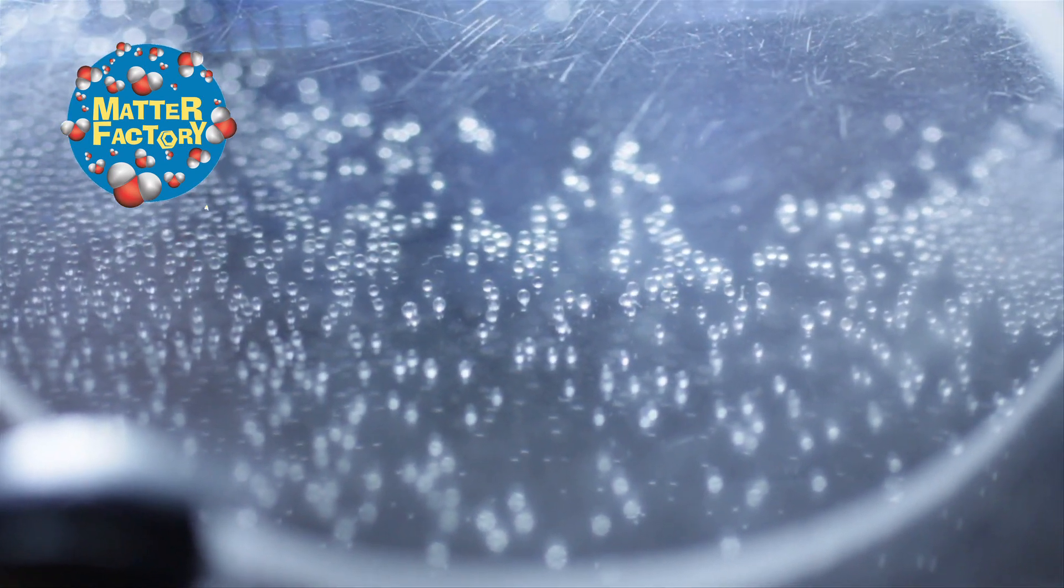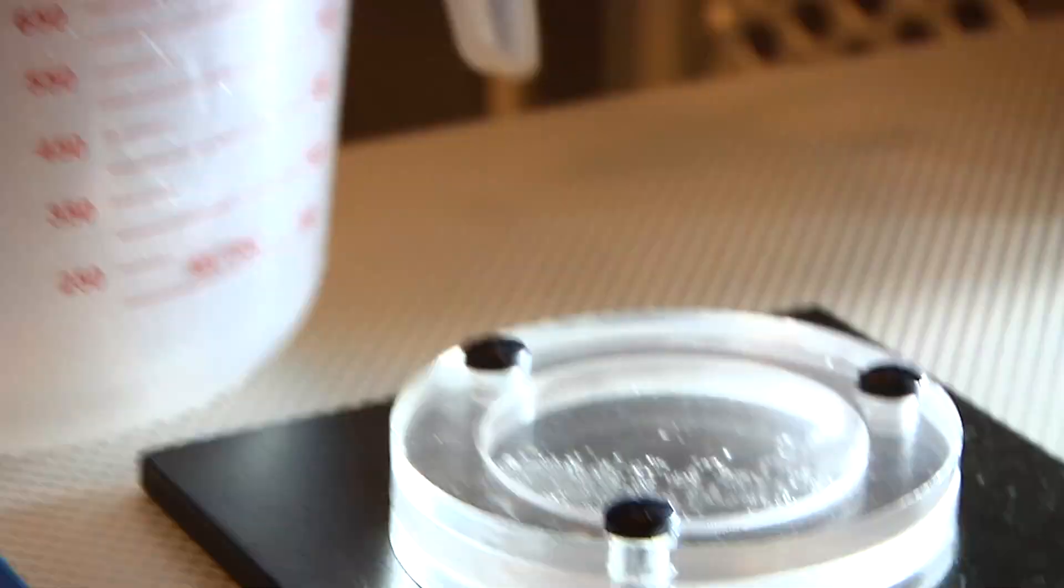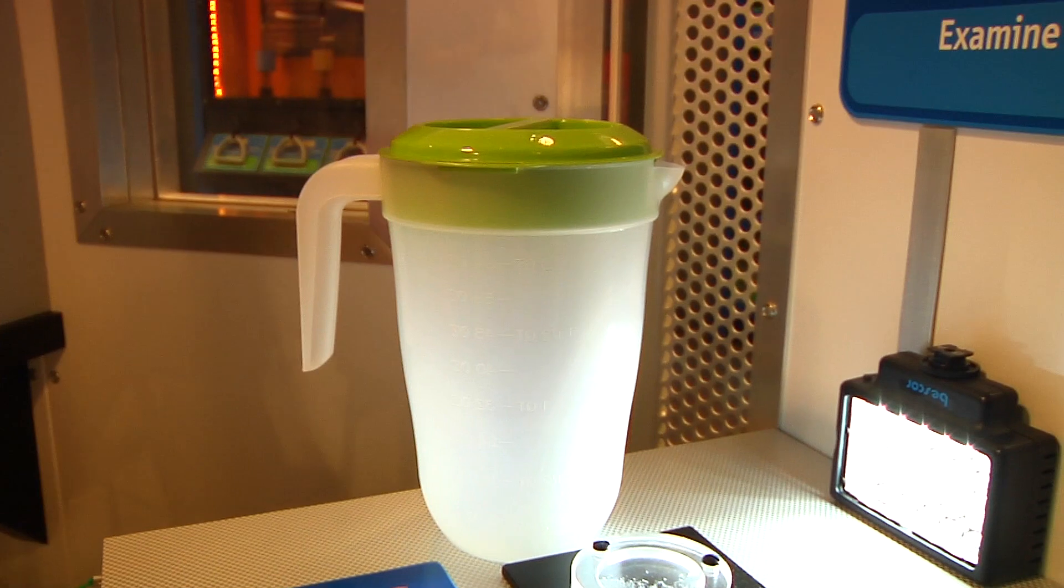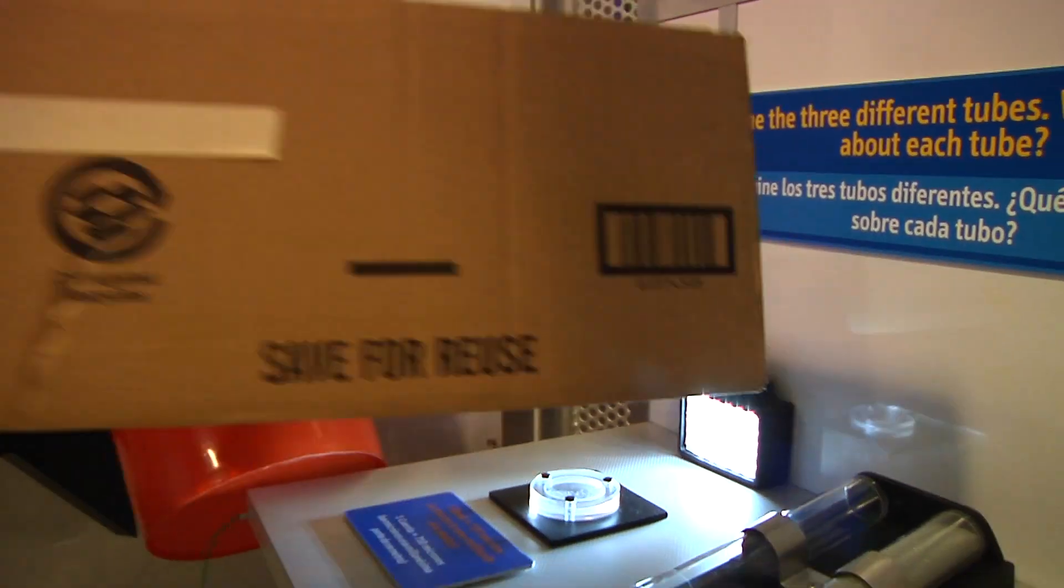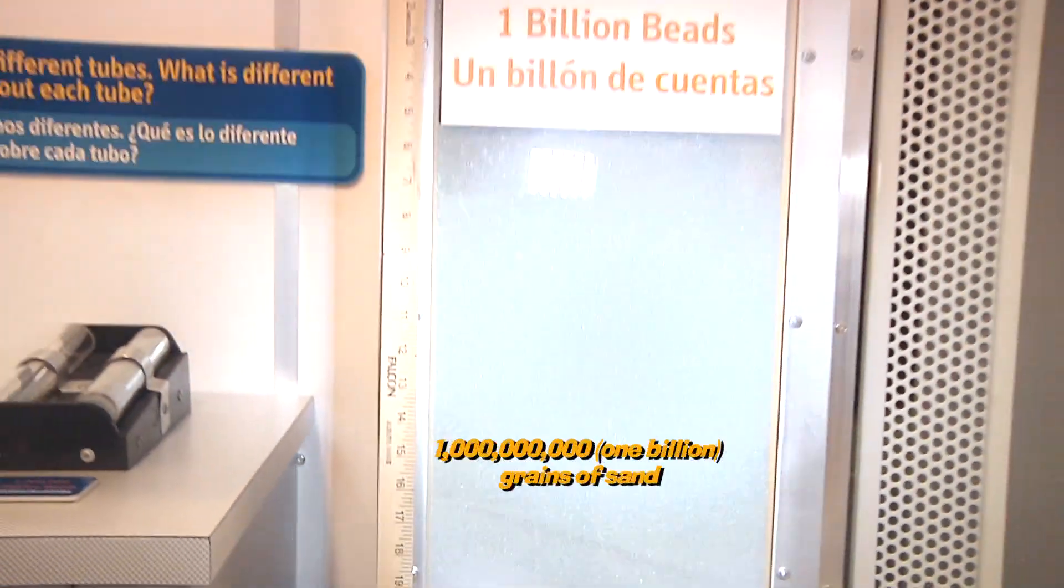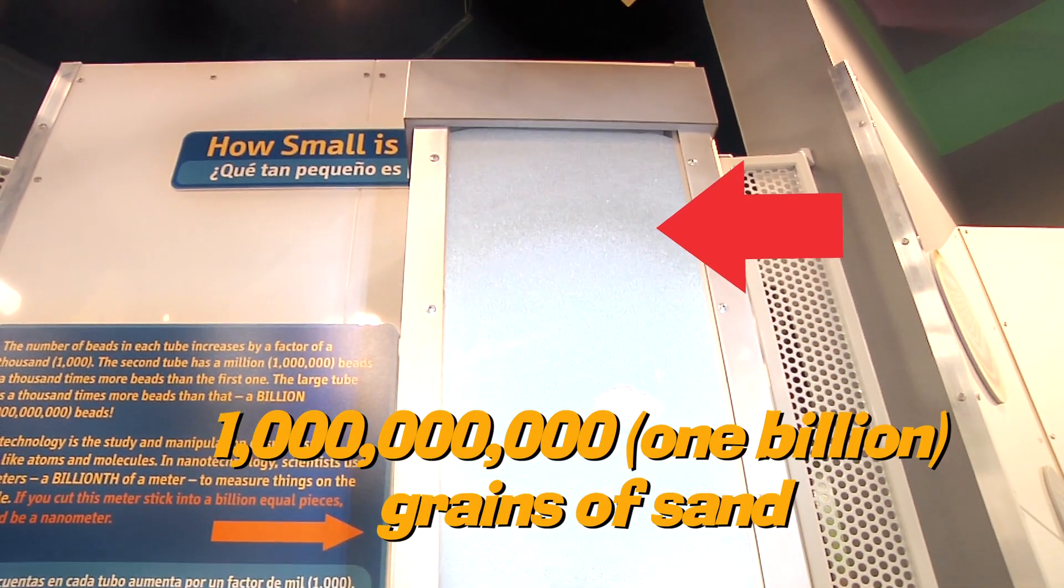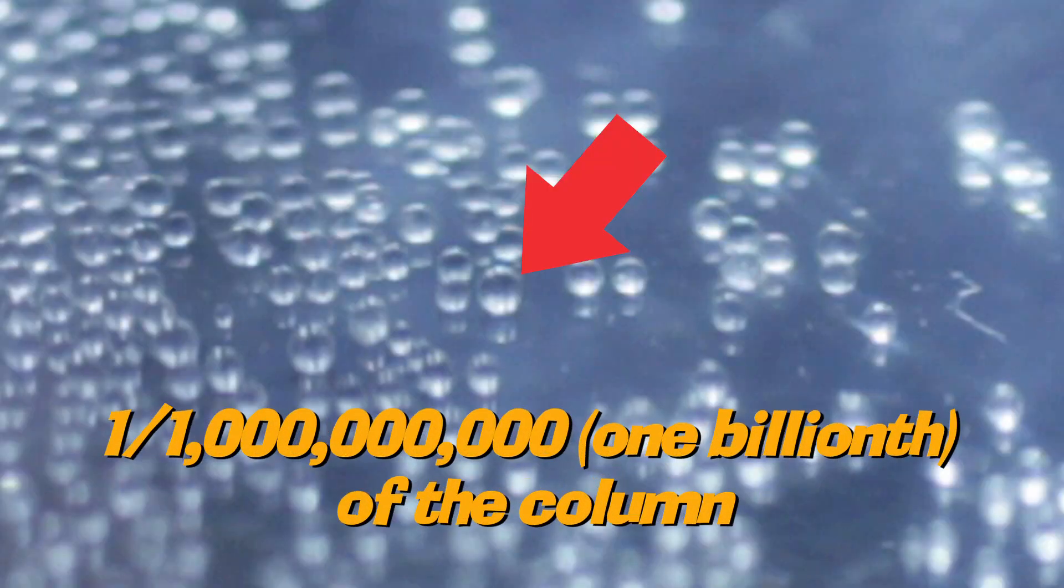To give you some perspective, look at these very tiny little grains of sand. Now imagine a billion of them. Would it fill up this cup? This pitcher? This bucket? What about this box? Actually, these are all too small. It takes this whole column to hold one billion grains of sand. So one billionth of this column is one individual grain of sand.